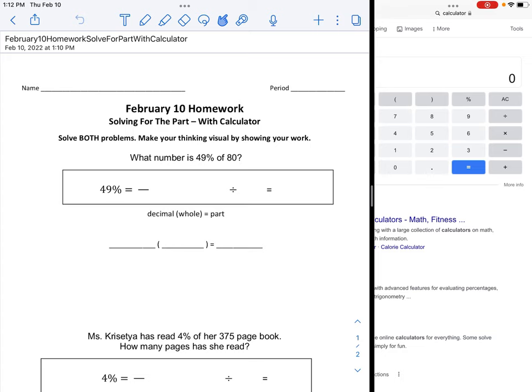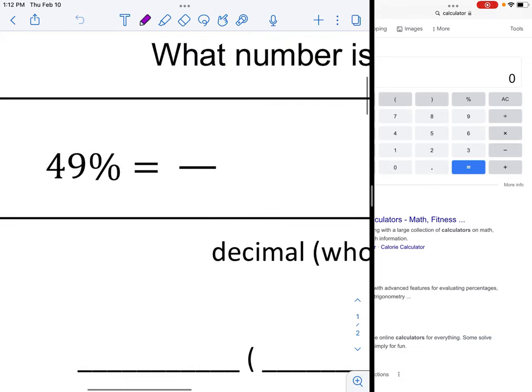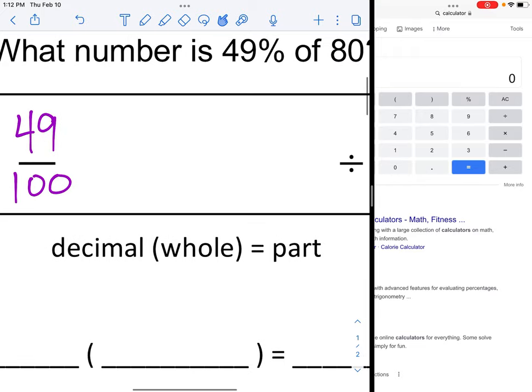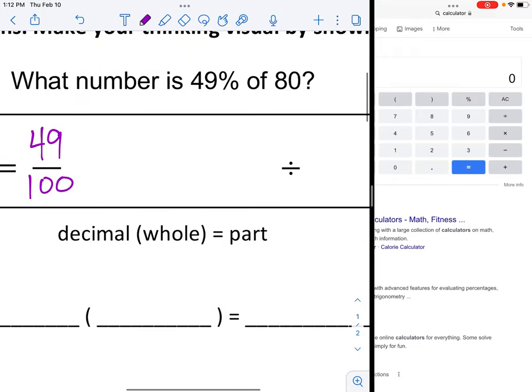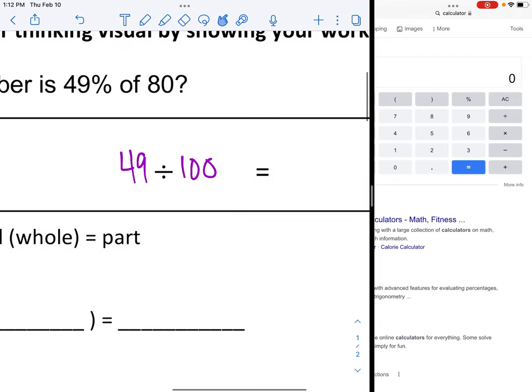So I can see in this box, it says 49% equals, so I'm going to write 49 on top of 100. Then I'm going to go over, and I'm going to write in 49 divided by 100, because I'm going to change my percent into a decimal. And I'm going to put it in my calculator over here on the right, 49 divided by 100 equals 0.49. And that reminds my brain, oh yeah, that's 0 and 49 hundredths.